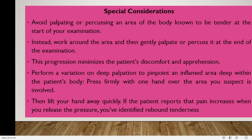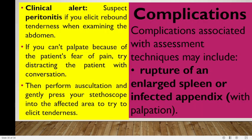To pinpoint an inflamed area deep within the patient's body, press firmly with one hand over the suspected area, then lift your hand away quickly. If the patient reports that pain increases when you release the pressure, you have elicited rebound tenderness. Clinical alert: suspect peritonitis if you elicit rebound tenderness when examining the abdomen. If you cannot palpate because of the patient's fear of pain, distract the patient with conversation, then perform auscultation and gently press your stethoscope into the affected area to try to elicit tenderness.